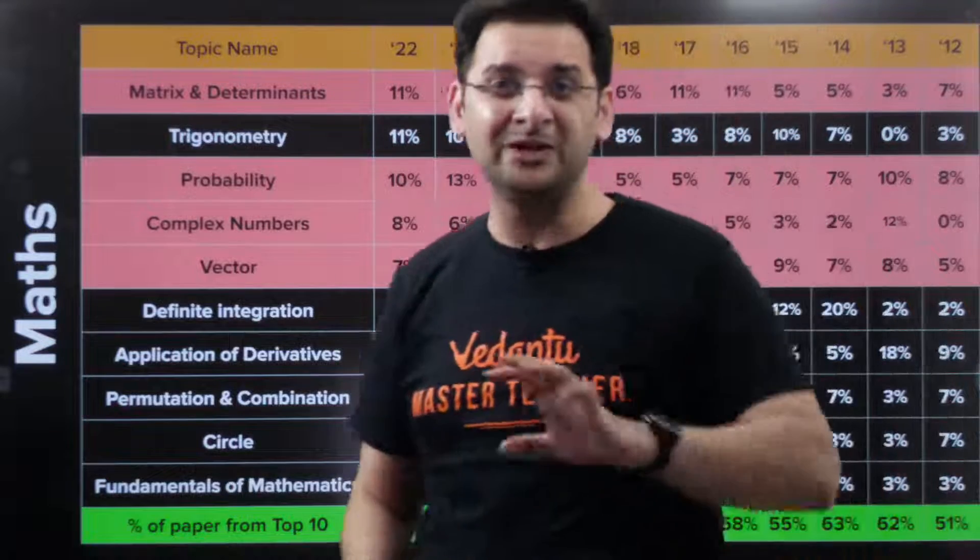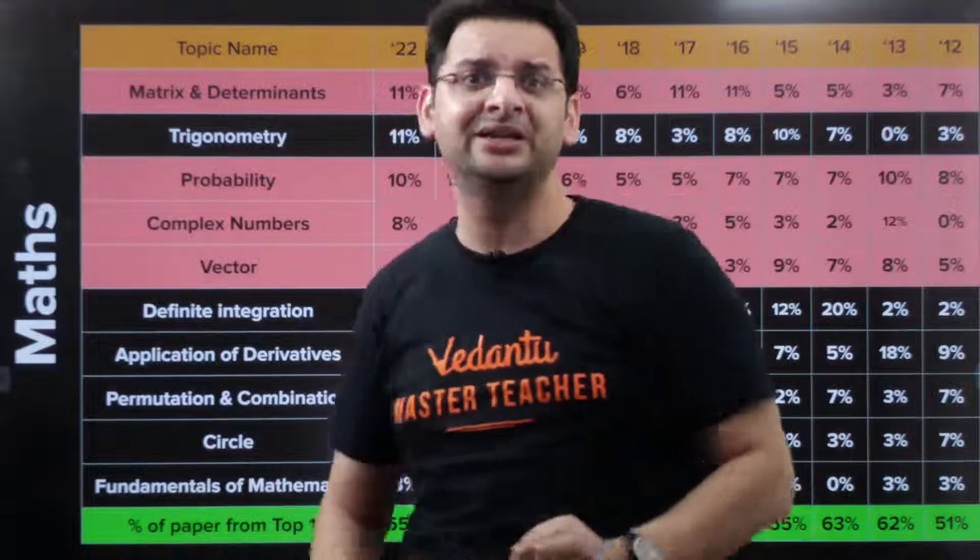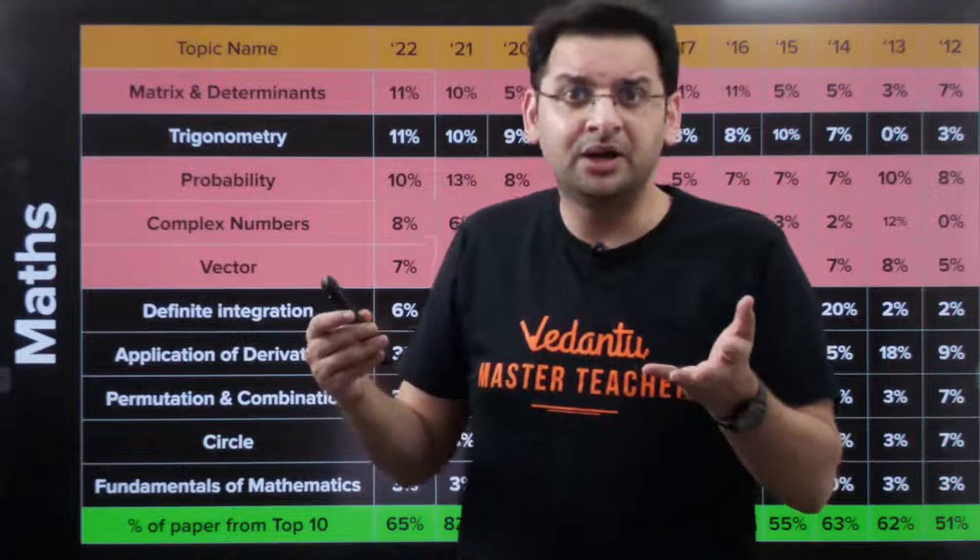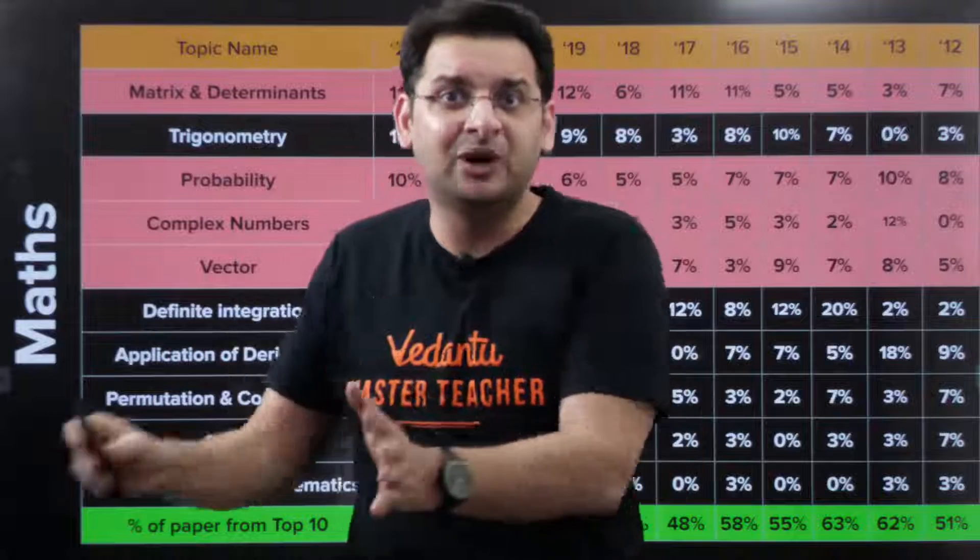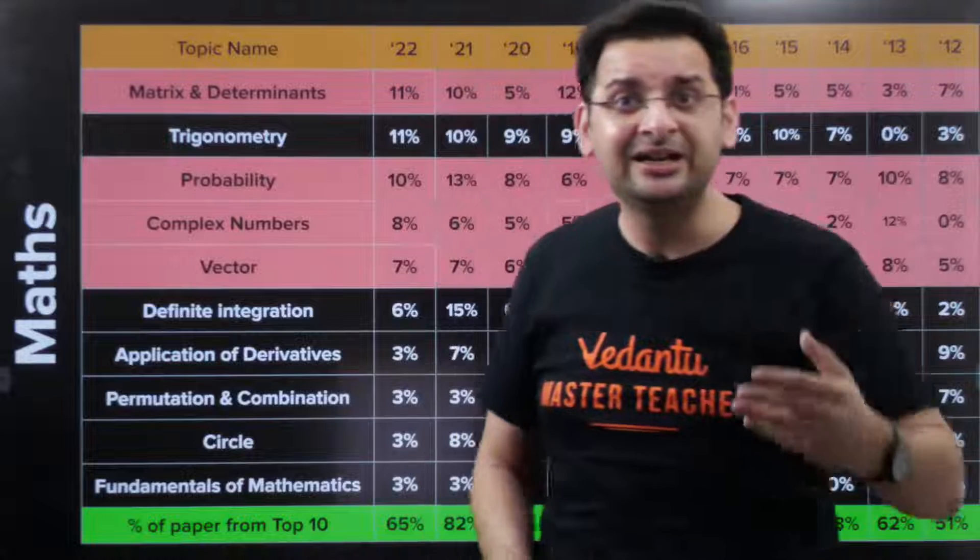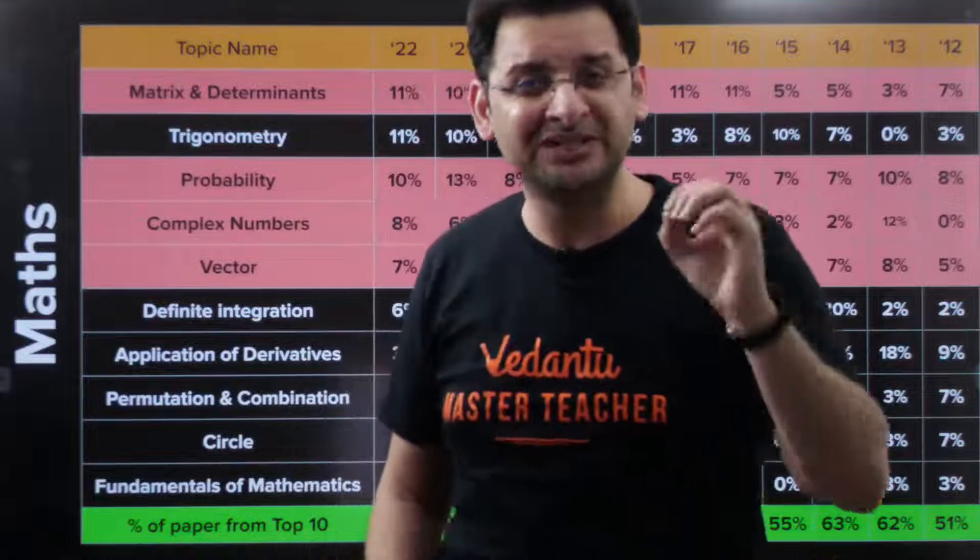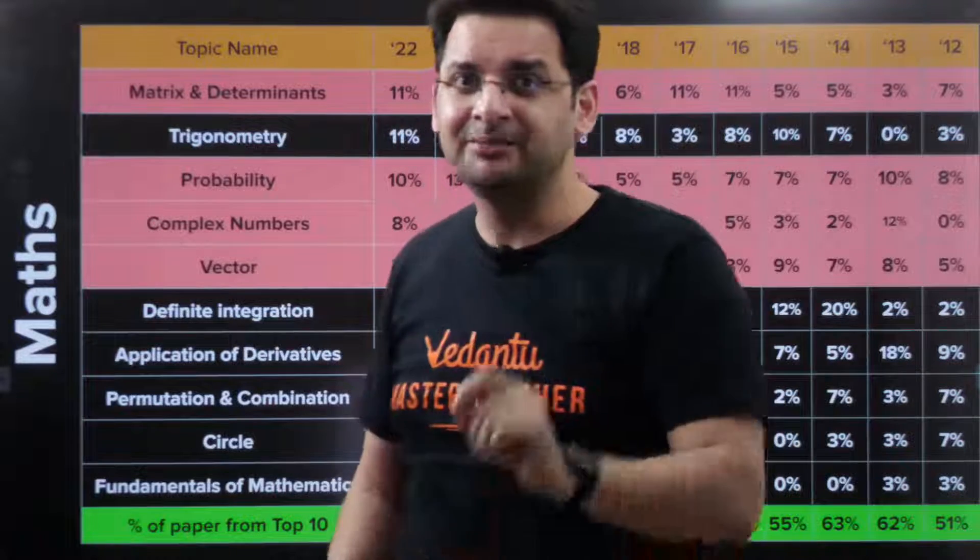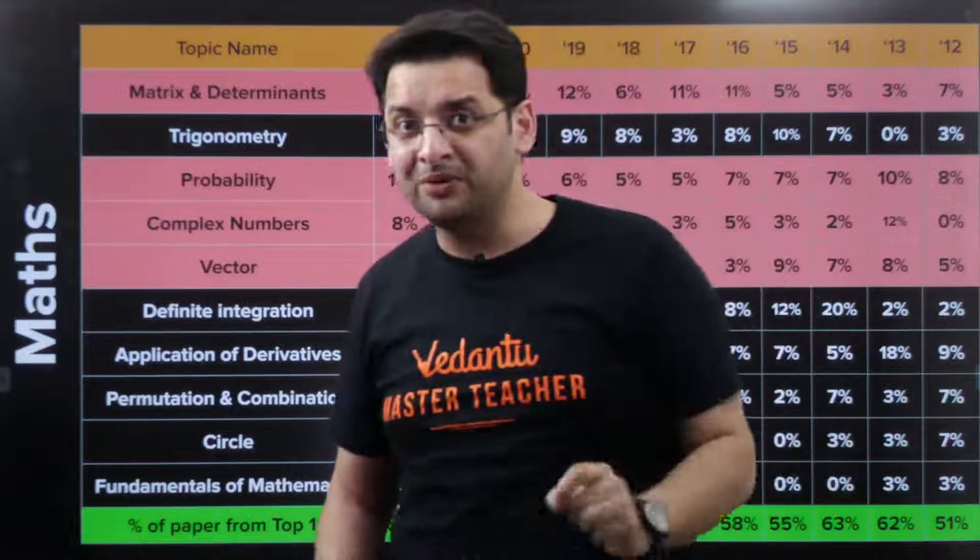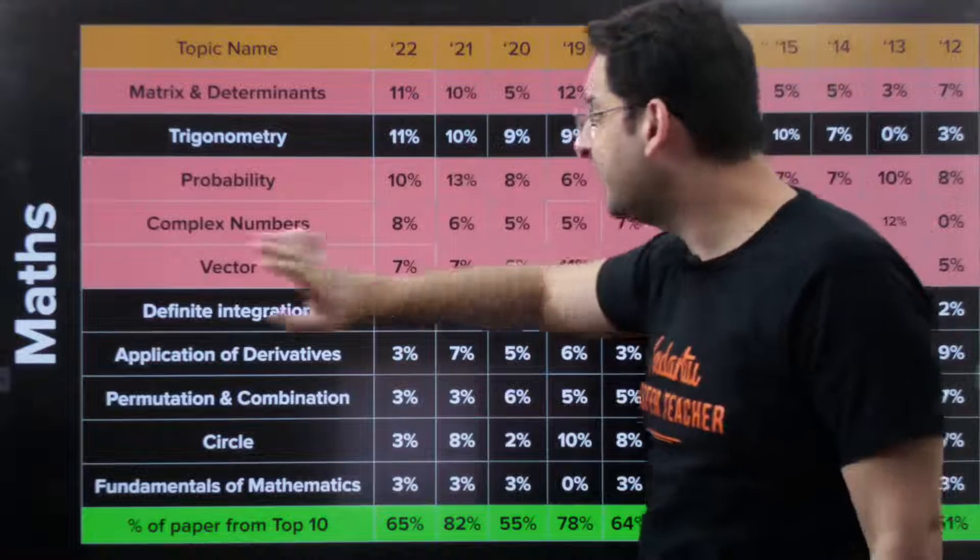Followed by probability. And probability is one topic we do not pay much attention to because of the simple fact that this is generally the last topic we discuss in class 12th. And by the end of class 12th, there's huge pressure of revising things because JEE Mains first attempt is on the cards in a few months. So this is one topic that we tend to ignore.